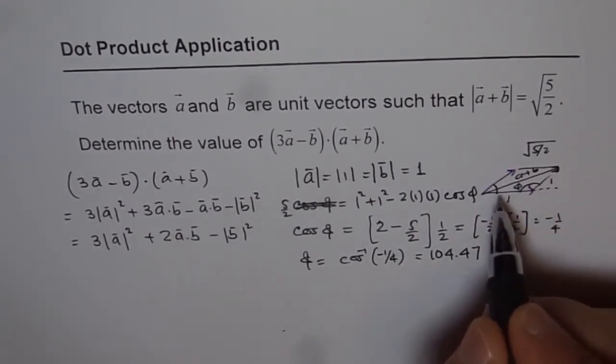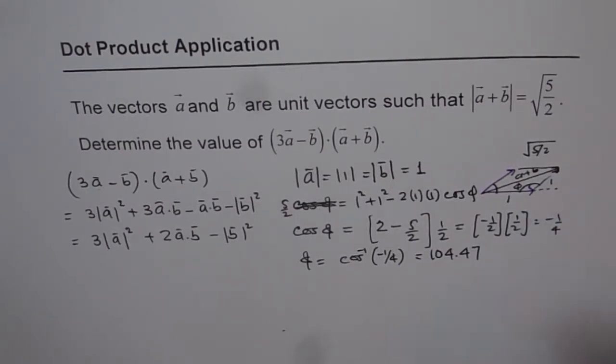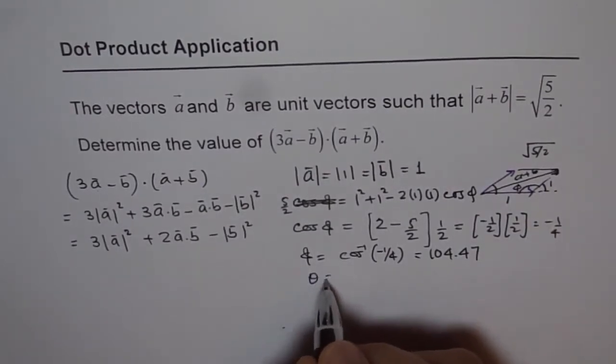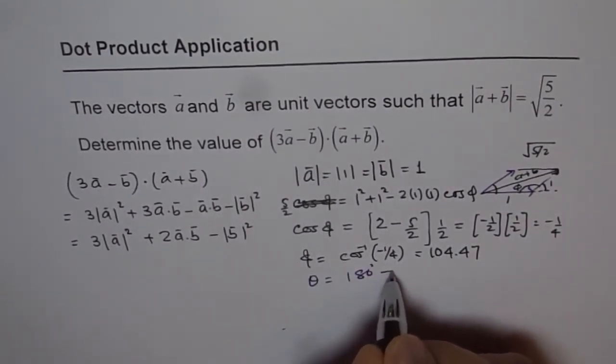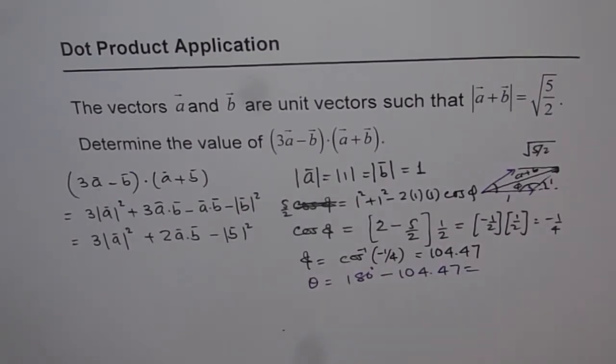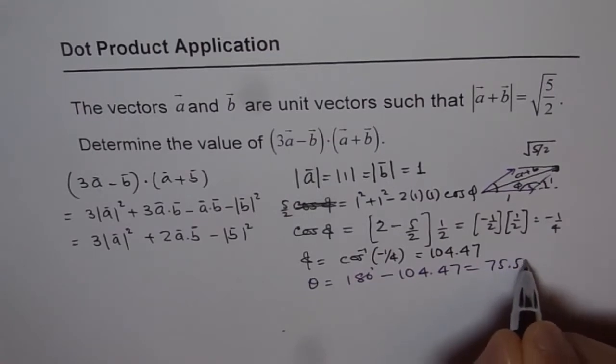So this is the angle phi. Now, what is the angle between A and B? Between A and B it is 180 minus phi. So this angle here, which we are interested in, theta is 180 degrees minus 104.47. That is equal to 75.52.